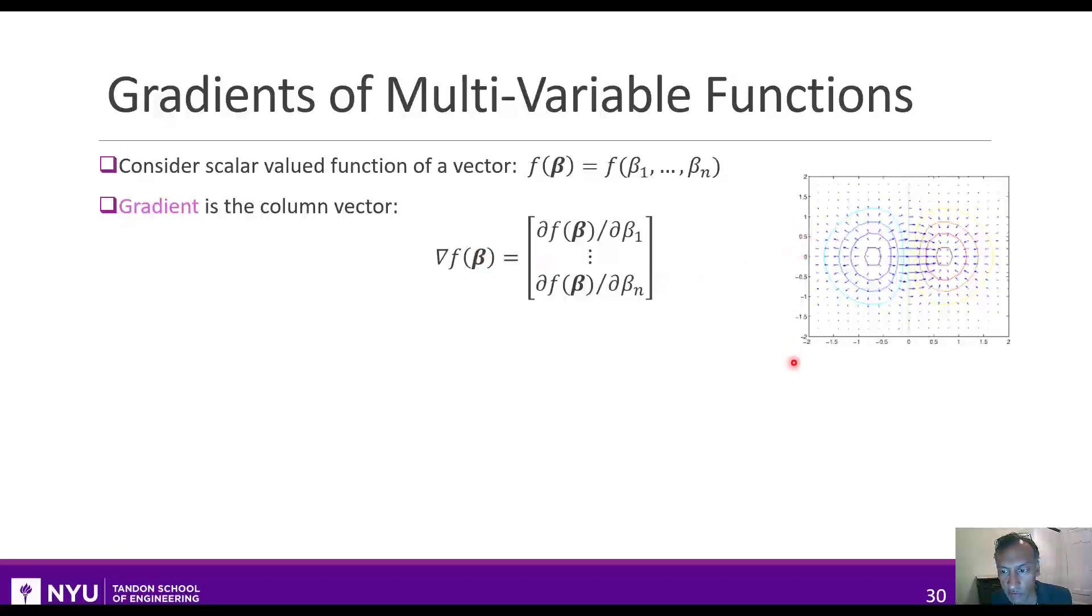So if we had a function that was a function of two variables, say beta 1 and beta 2, at each point beta 1, beta 2, the gradient would be a vector. So the vector would have a direction and a magnitude, like this, which we could draw like these arrows.